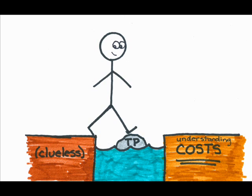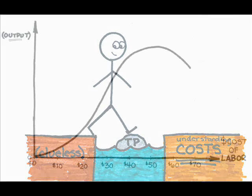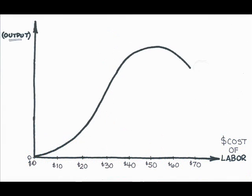We usually refer to the price of labor as wage, so let's assume that each unit of labor costs $10. In the new diagram, everything looks largely the same, except that I replace one unit of labor with $10, two units of labor with $20, three units of labor with $30, and so on.